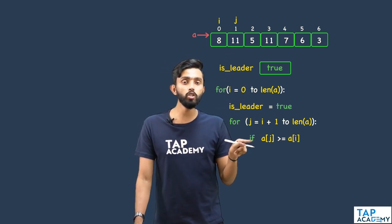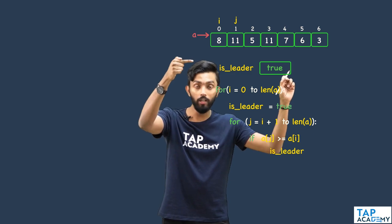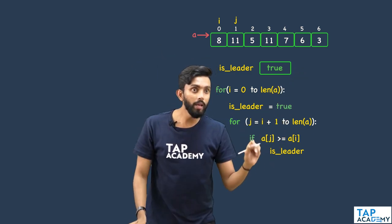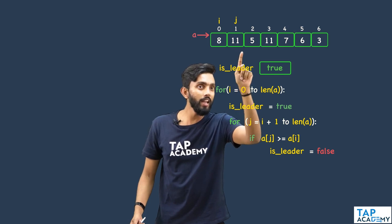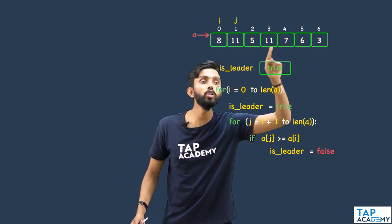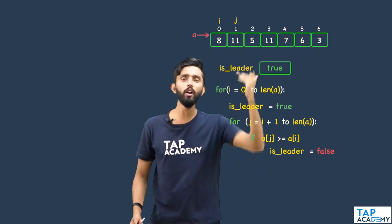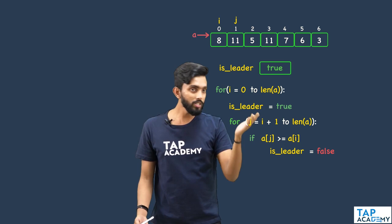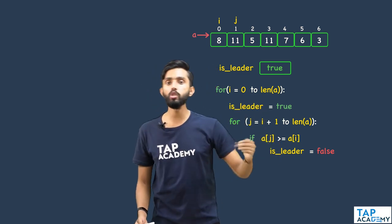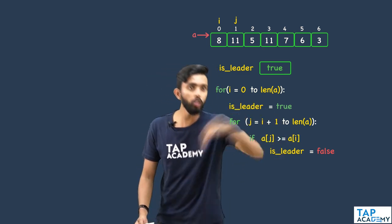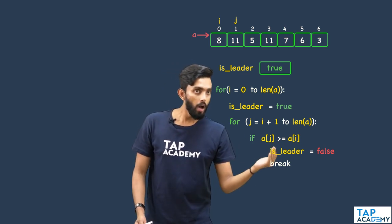If a[j] is greater than or equal to a[i], then the ith element is not a leader — my assumption is wrong. So I make isLeader equal to false. There is no need to check any other elements, so I break out of the loop. If this one element is already greater, it doesn't matter whether others are greater or equal.